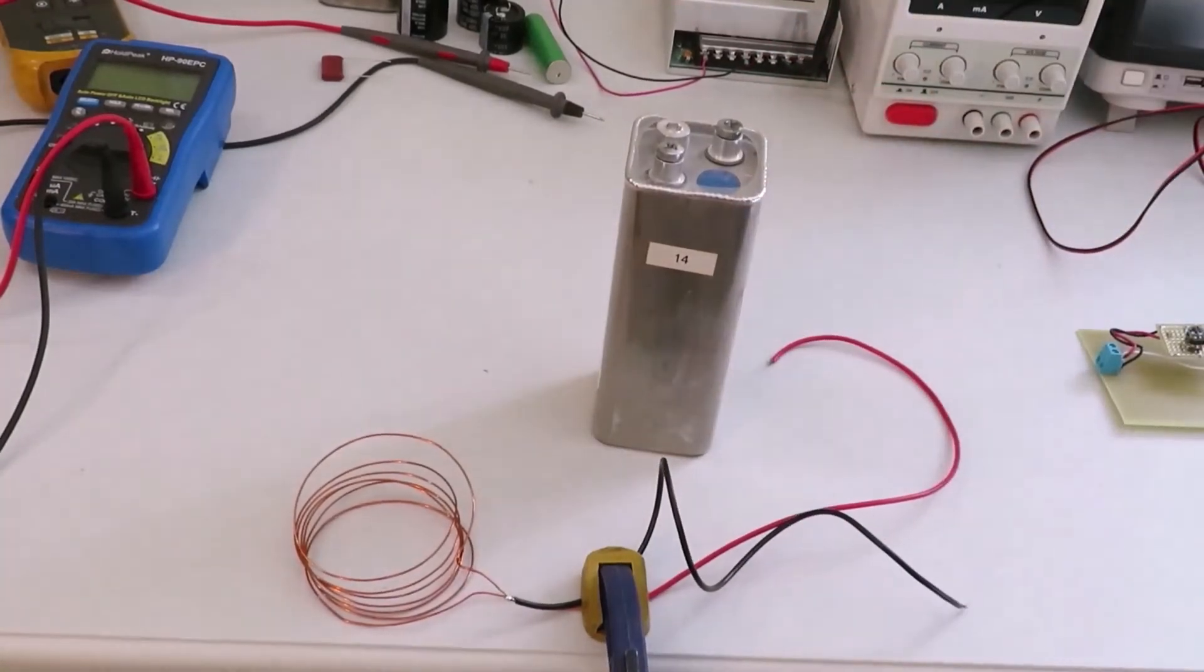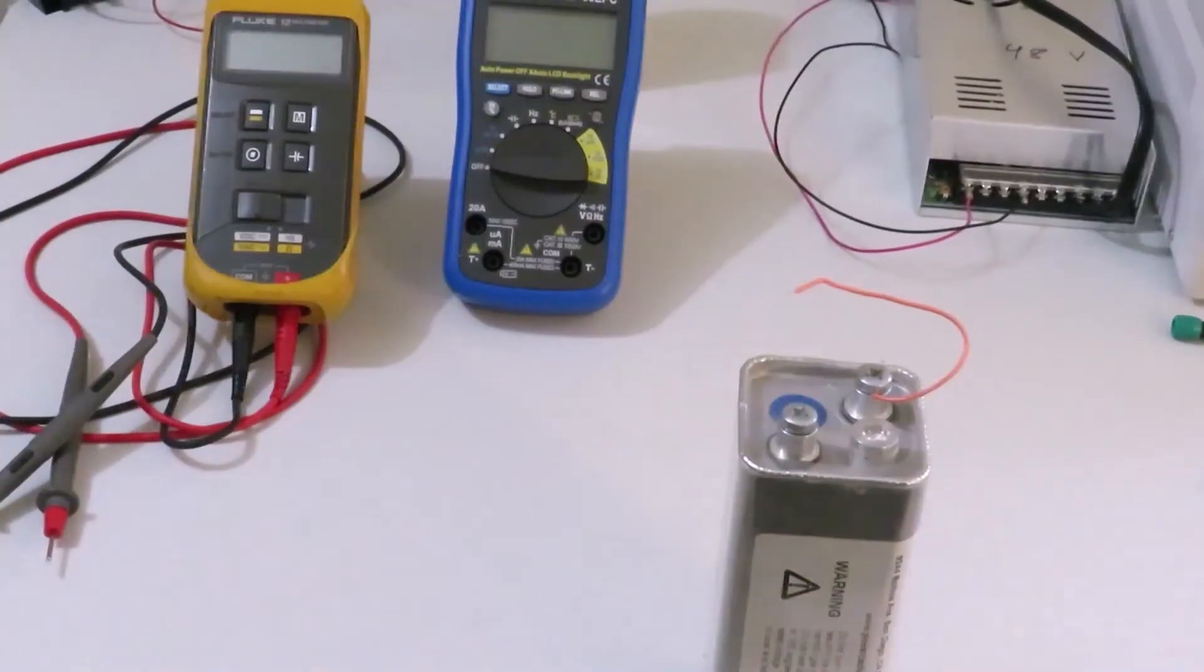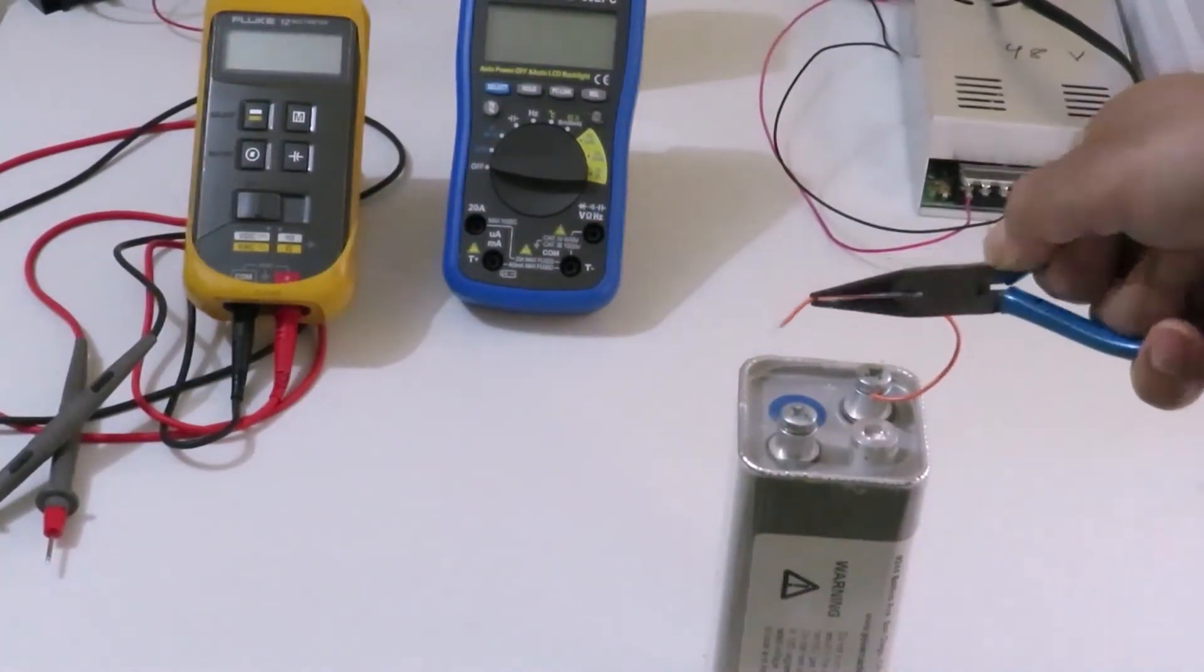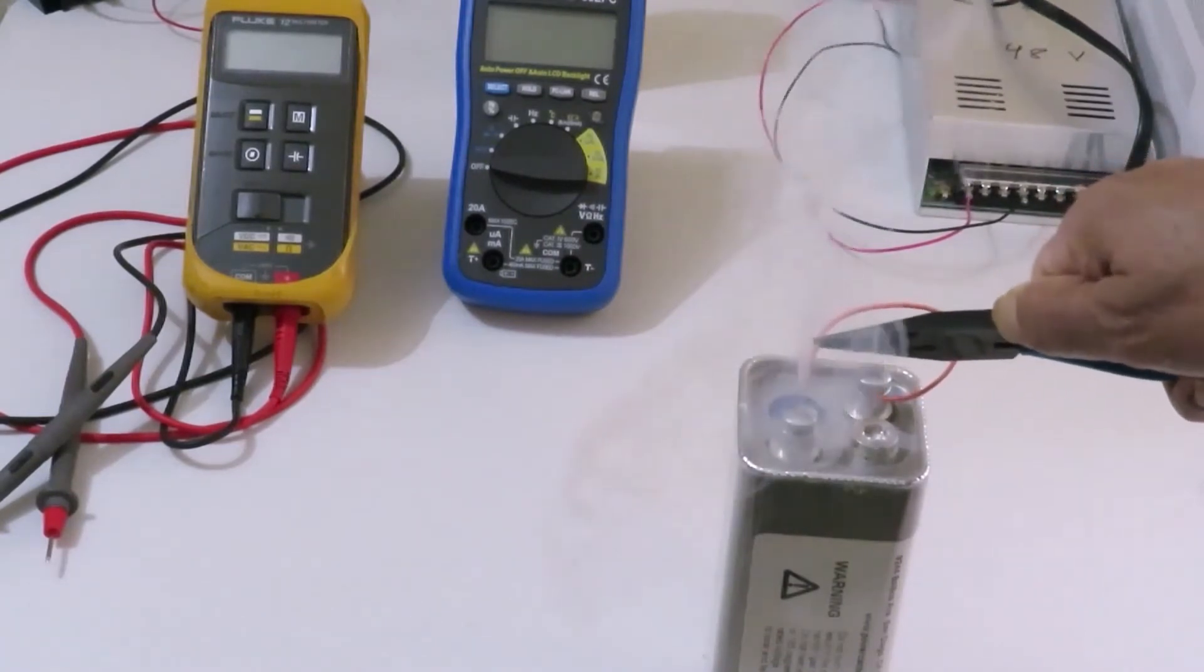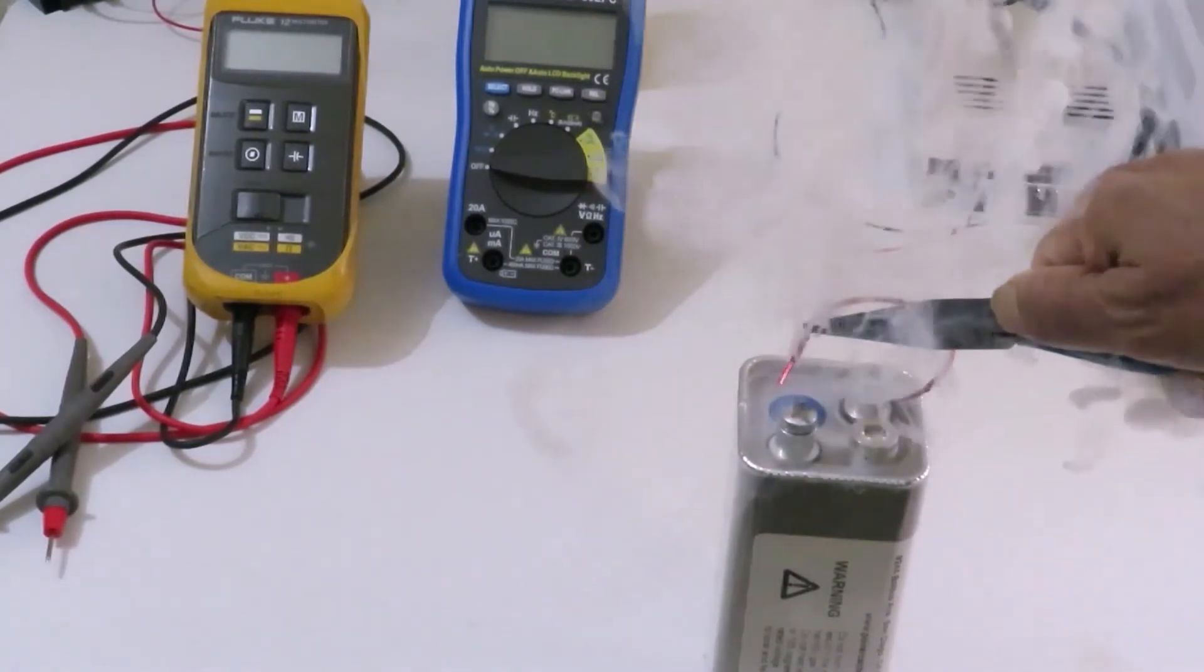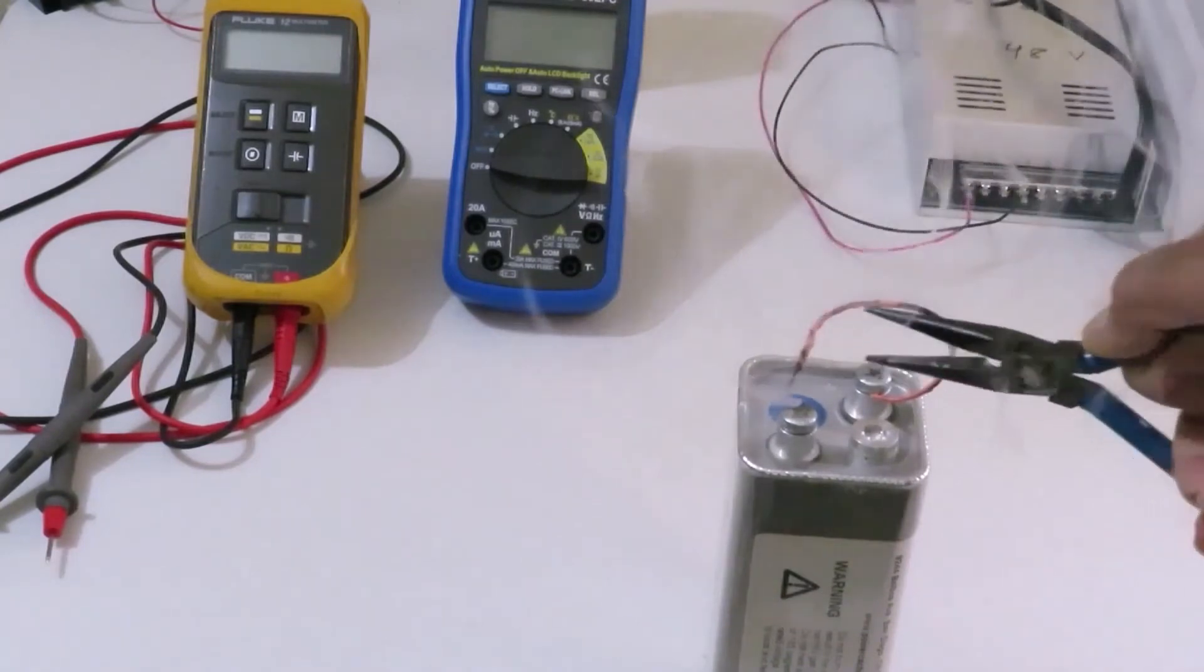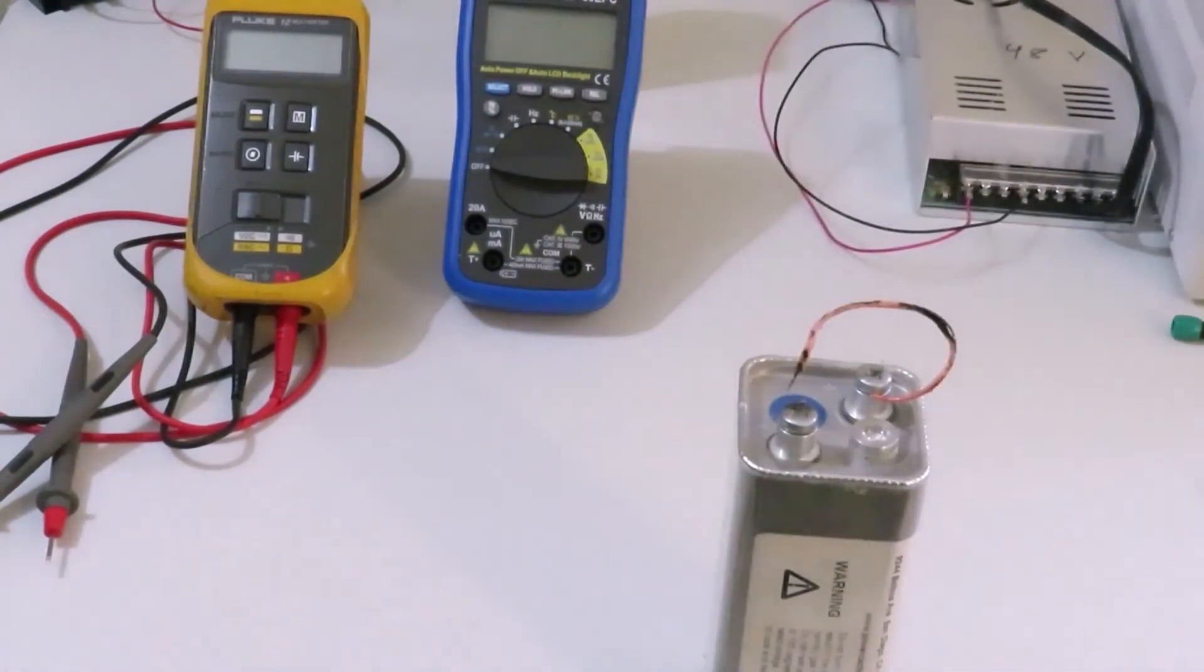Next test will be a short circuit test. I am using a few centimeter long 22 gauge wire. It is a pretty dangerous test. You have to test it carefully. You can see the wire is glowing red hot.